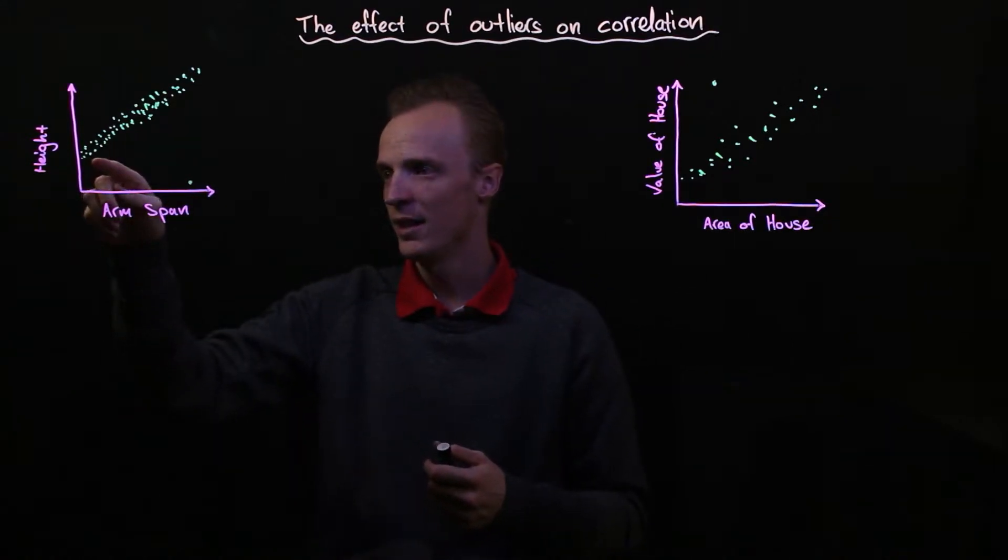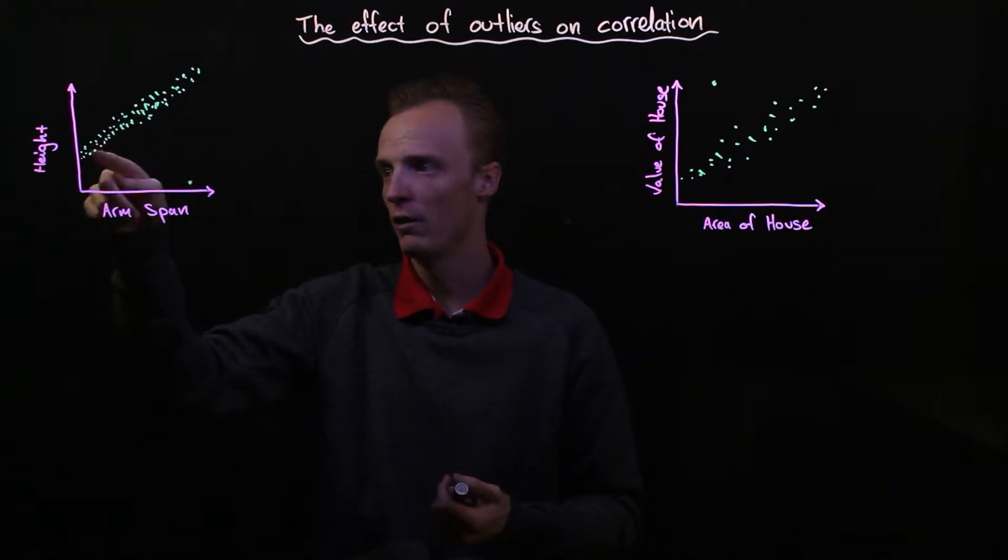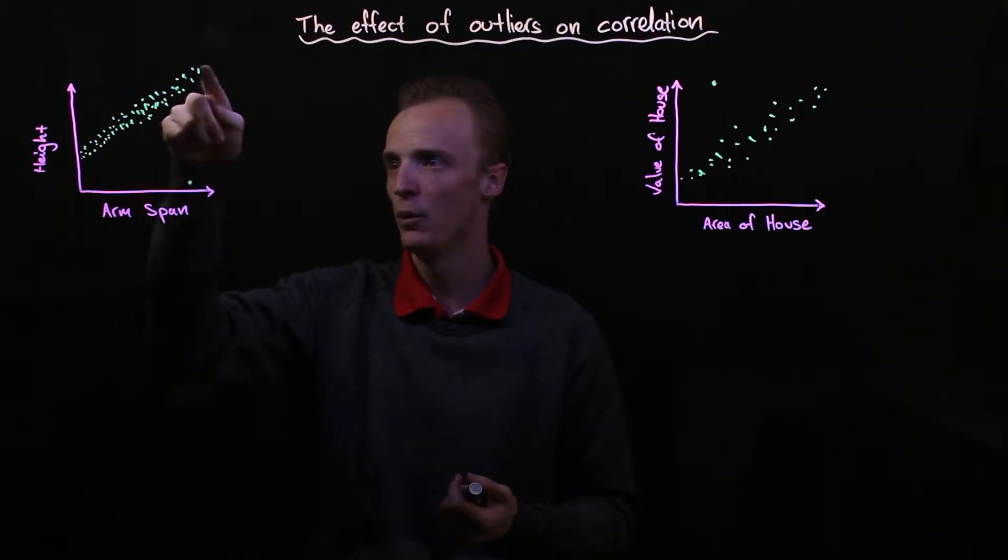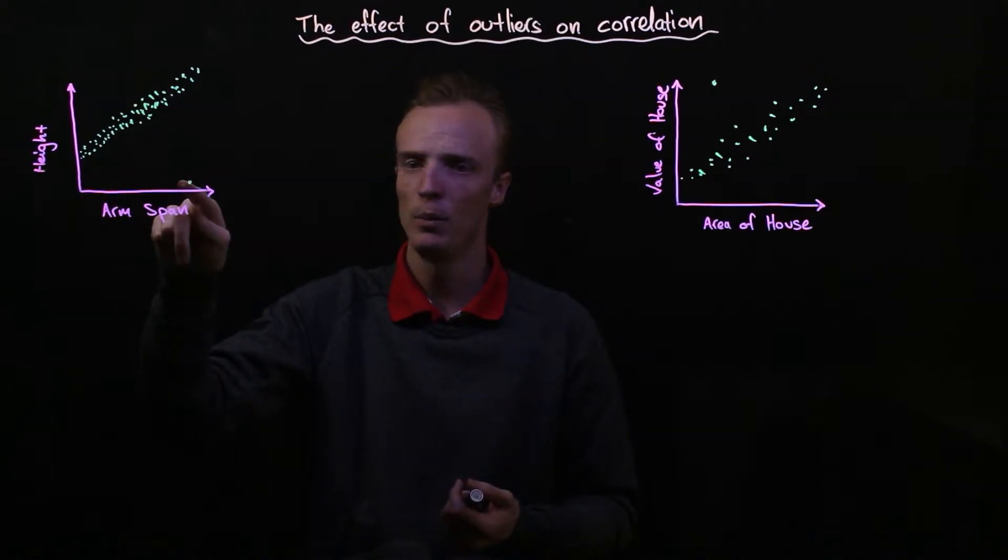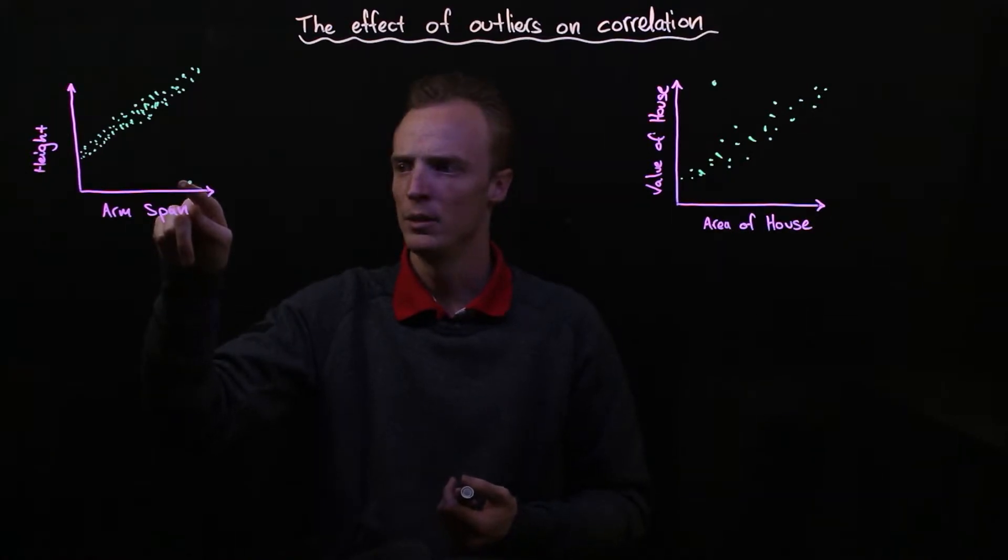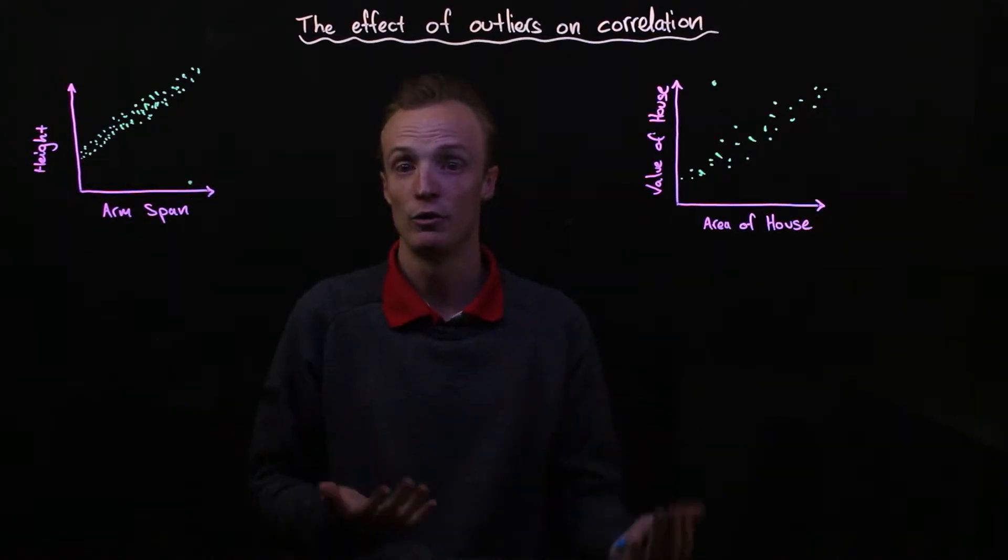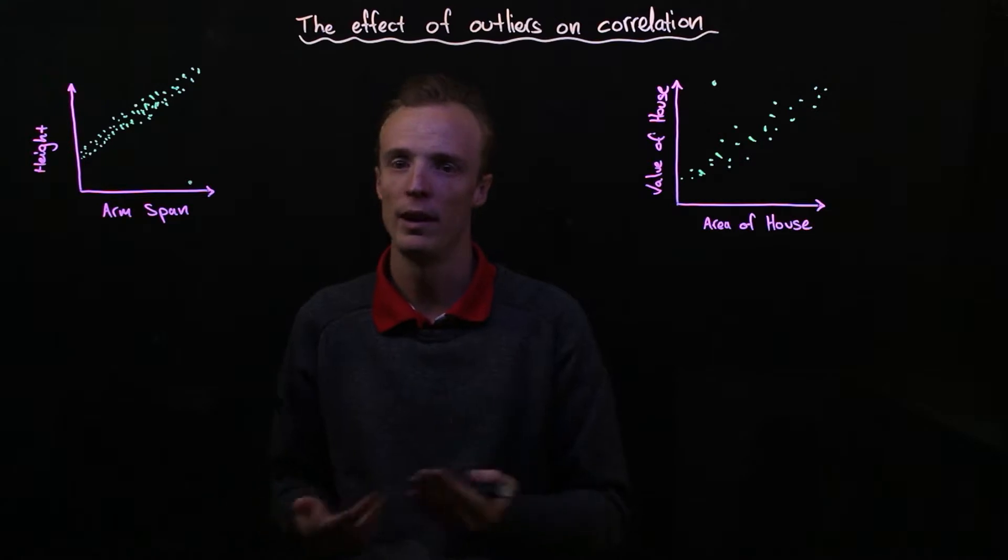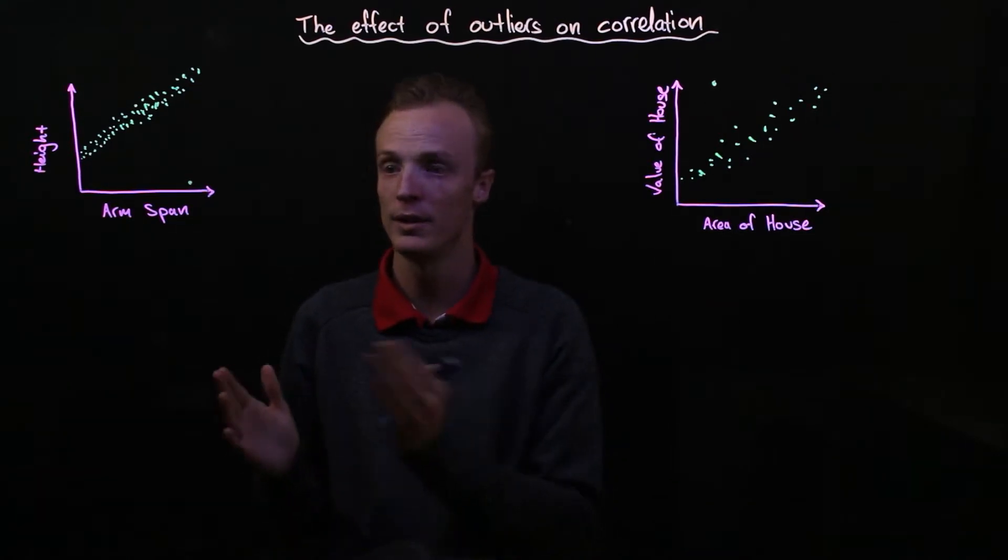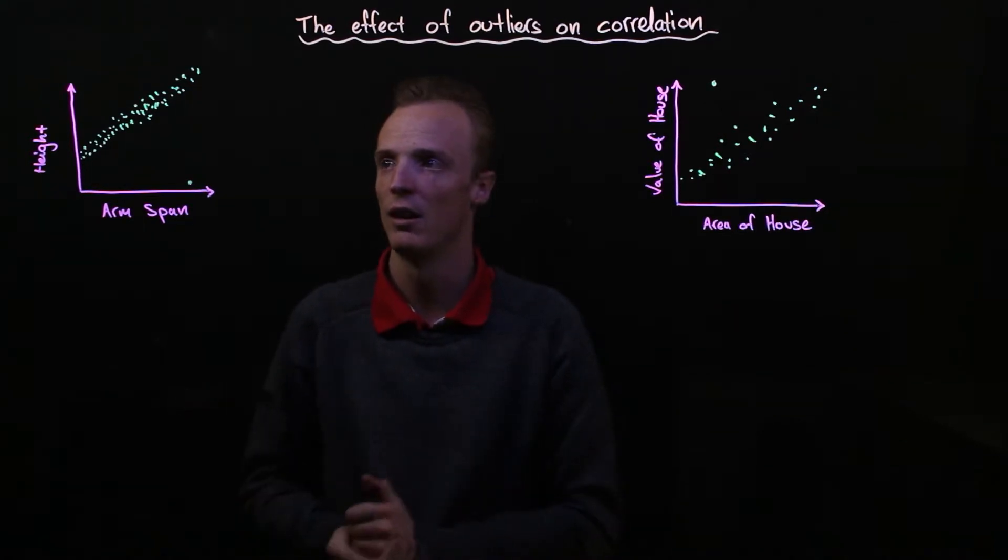And you can see that if we're looking at this general trend of our correlation, it seems to follow a positive trend up in here, except for this one point down in here. This one point doesn't seem to follow that trend and we call that point an outlier. So any point that doesn't follow the trend is an outlier.